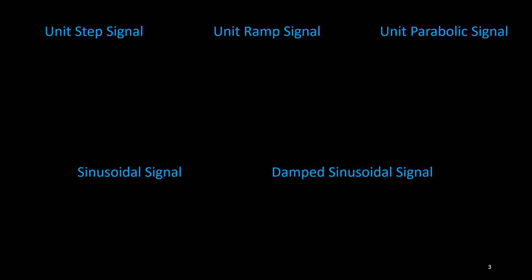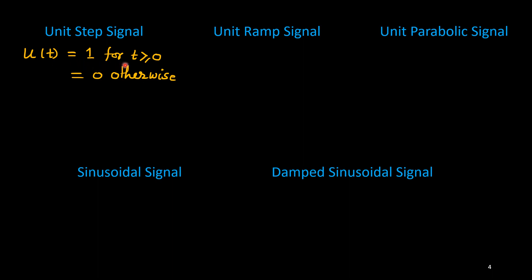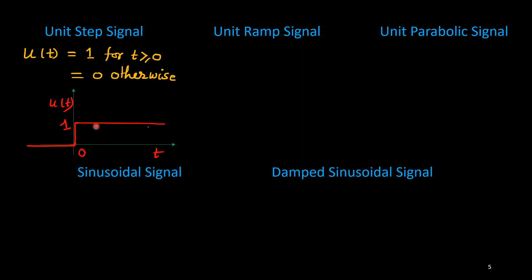Let us have a quick discussion on these signals. u(t) is used for the unit step signal. The notation is: u(t) equals 1 for t greater than or equal to 0, otherwise it is 0. This implies that on the right-hand side of time it is always 1 and on the left-hand side it is 0.